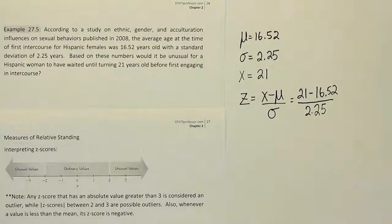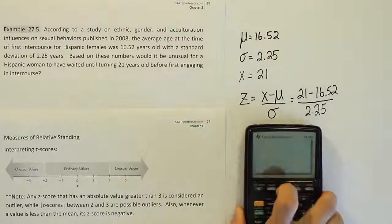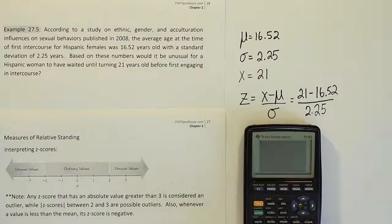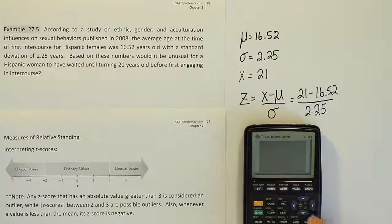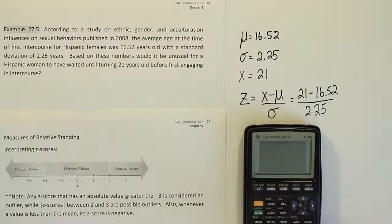So let's pop that in the calculator and see what it gives us. Using the calculator and doing it all at once, we'll use a parenthesis for the top. We'll do 21 minus 16.52, close up that parenthesis, and divide by the standard deviation of 2.25.